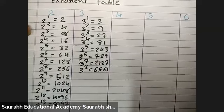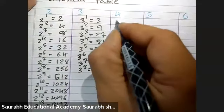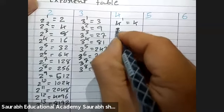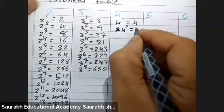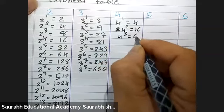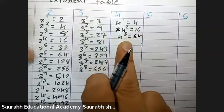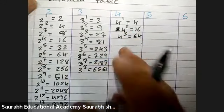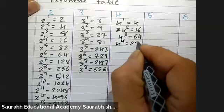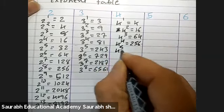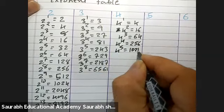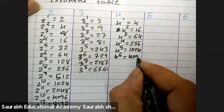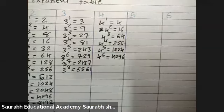Now, remember, the next exponent table is 4. 4 raise to 1 is 4, 4 raise to 2 is 16, 4 raise to 3 is 64. So 2 raise to 6 or 4 raise to 3, it is 64, right? 4 raise to 4 is 256, 4 raise to 5 is 1024, and 4 raise to 6 is 4096, right?